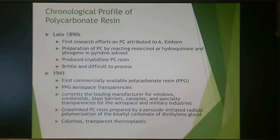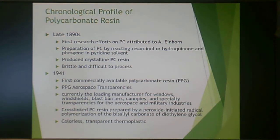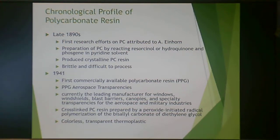When it comes to polycarbonates, these were first developed in the late 1890s by reacting resorcinol, hydroquinone, phosgene, and a pyridine solvent. This produced very crystalline polycarbonate resin, which was difficult to process and very brittle — not terribly useful. Fast forward to 1941, and that's where we get the first commercially available polycarbonate resin, produced by PPG Aerospace Transparencies.